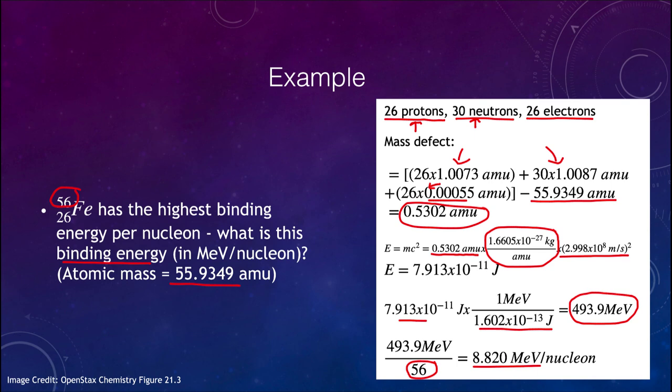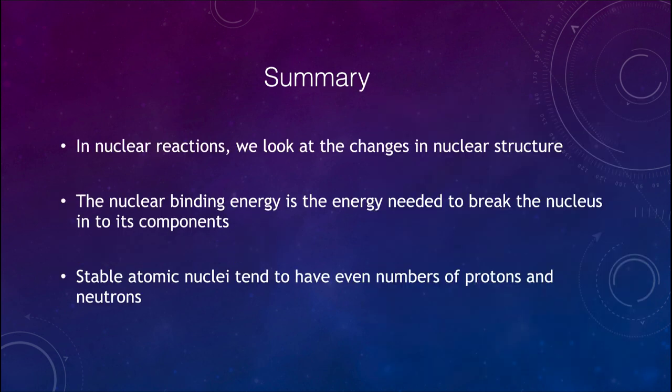Let's go ahead and finish up with our summary. What we found so far, we looked at nuclear reactions as changing in the nuclear structure, not just the electrons as we've looked at in the past. We talked about the nuclear binding energy, which is the energy needed to break up the nucleus into its components. And we looked at stable atomic nuclei, and we found that they tend to have even numbers of protons and neutrons, and to have magic numbers of these as well. That concludes this lecture on nuclear structure. We'll be back again next time for another topic in physical science. So until then, have a great day, everyone, and I will see you in class.